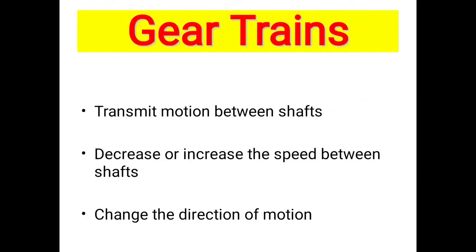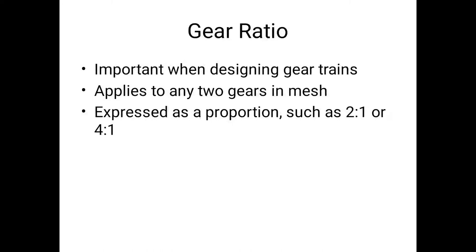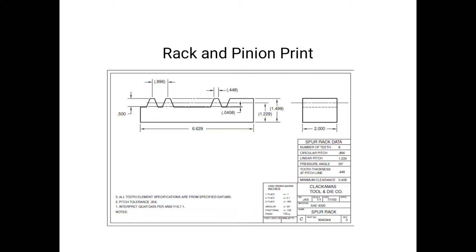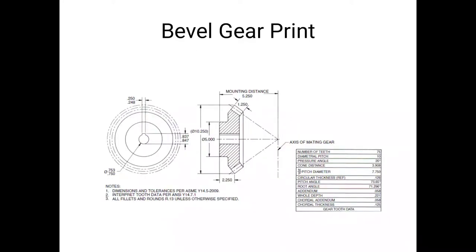Cluster gear, pinion gear trains transmit motion between shafts, decrease or increase speed between shafts, change direction of motion. Gear ratio: important when designing gear trains, applies to any two gears in mesh, expressed as proportions such as 2 to 1 or 4 to 1. Rack and pinion printing mechanism designed in AutoCAD. Bevel gear specifications: number of teeth 75, diametral pitch 10, pressure angle 20 degrees, cone distance 3.90, pitch diameter 7.7, circular thickness 0.12, pitch angle 73 degrees, root angle 0.06, whole depth 0.22, chordal addendum 0.068, chordal thickness 0.125.